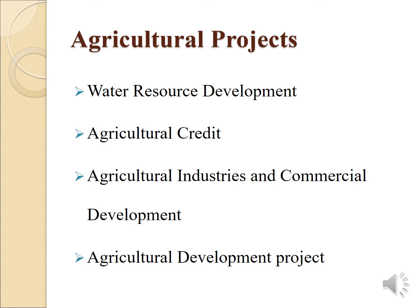What are the different types of agricultural projects? The first one is water resources development projects. Then agricultural credit projects. Next are agricultural industries and commercial development projects. Then agricultural development projects. Let us discuss each one by one.